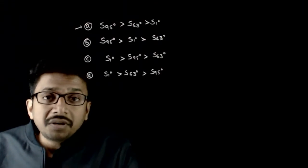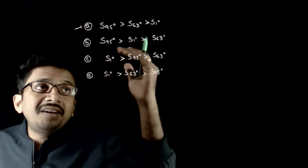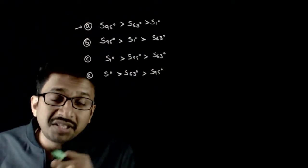Welcome students. In this question, you are asked to compare the values of sin 95 degrees, sin 63 degrees, and sin 1 degree. Given four options, you are asked to find which is right.